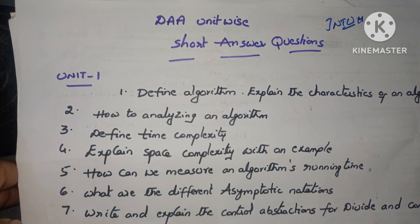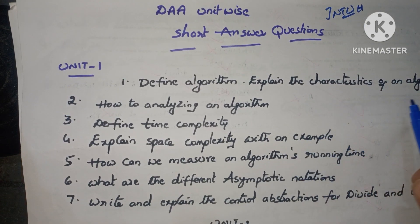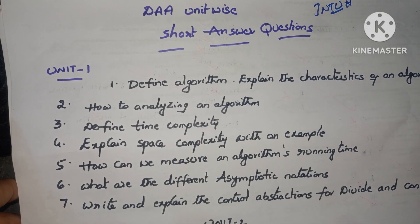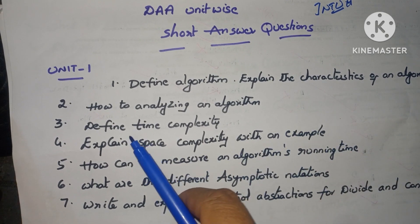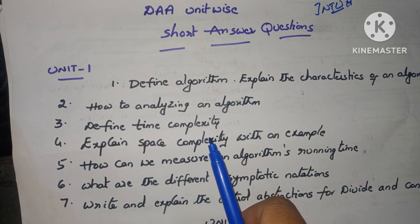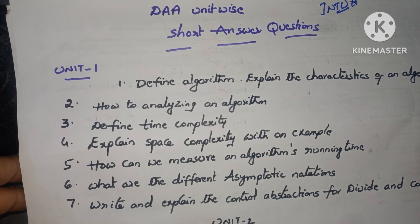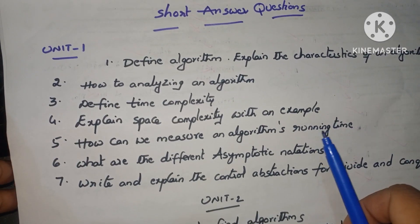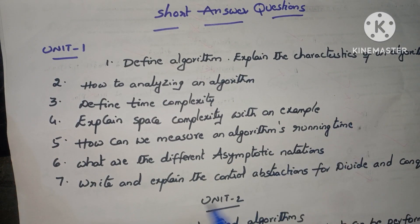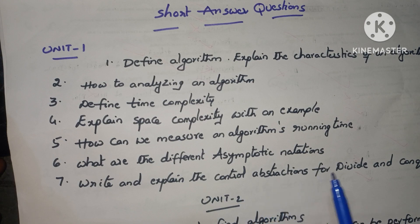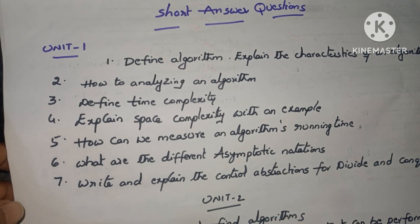Unit one questions: First, define algorithm and explain the characteristics of an algorithm. Second, how to analyze an algorithm. Third, define time complexity with an example. Fourth, explain space complexity with an example. Fifth, how can you measure an algorithm's running time. What is the difference between different asymptotic notations? Very important question. And write and explain the control abstraction for divide and conquer method — also a very important question.